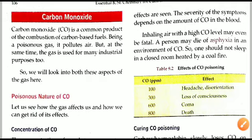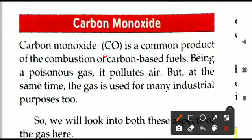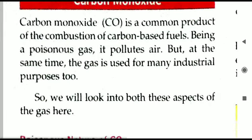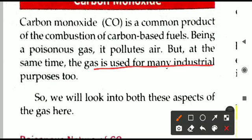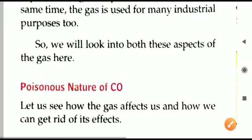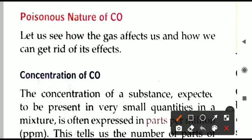Welcome to chemistry class. Today's topic is carbon monoxide. The chemical formula is CO. Carbon monoxide is a common product of the combustion of carbon-based fuels — whenever you burn any fuel which contains carbon, carbon monoxide is produced. Apart from being a pollutant gas, it is also a poisonous gas. Irrespective of these harms, it also has many industrial purposes. We will see all the related details of this gas, starting with its poisonous nature.